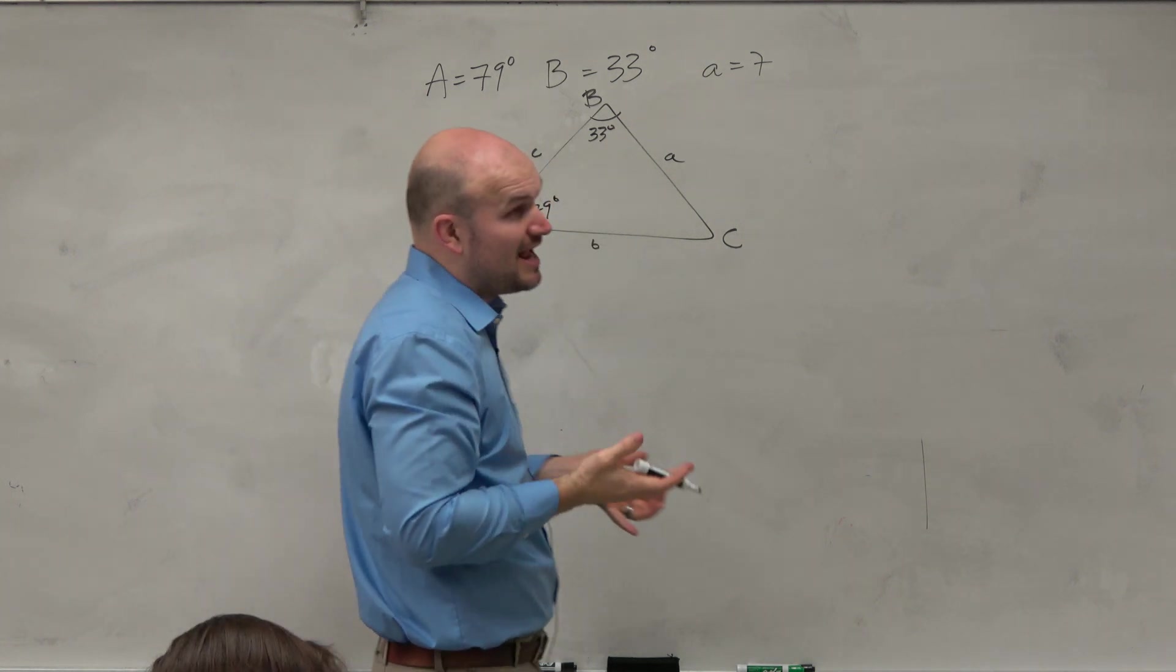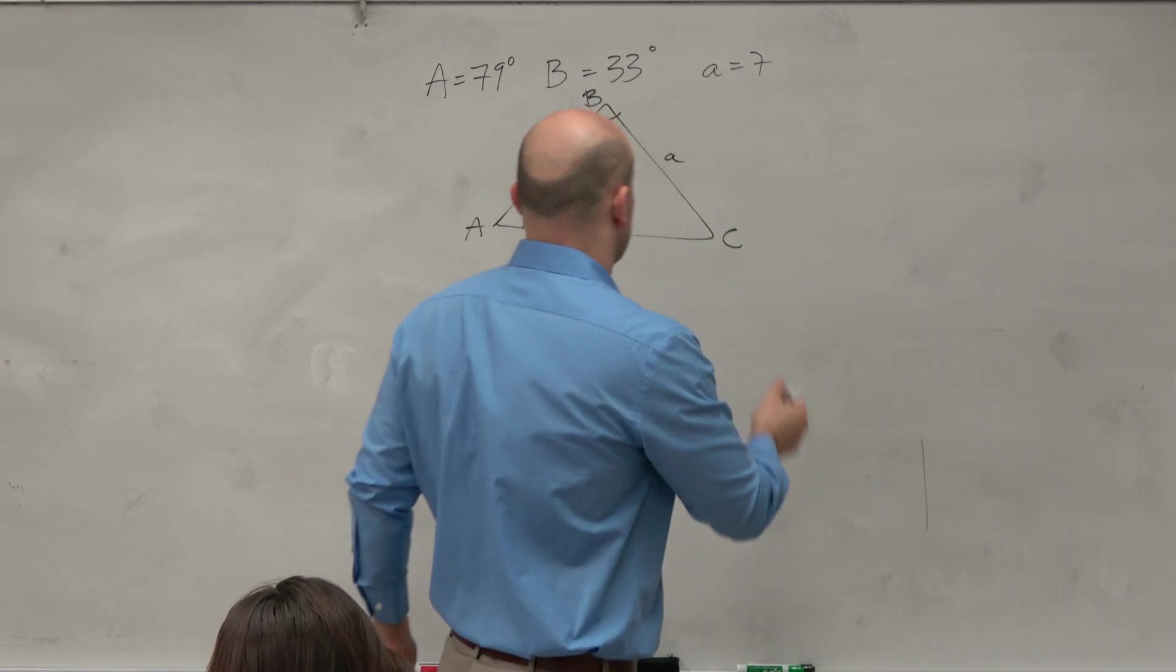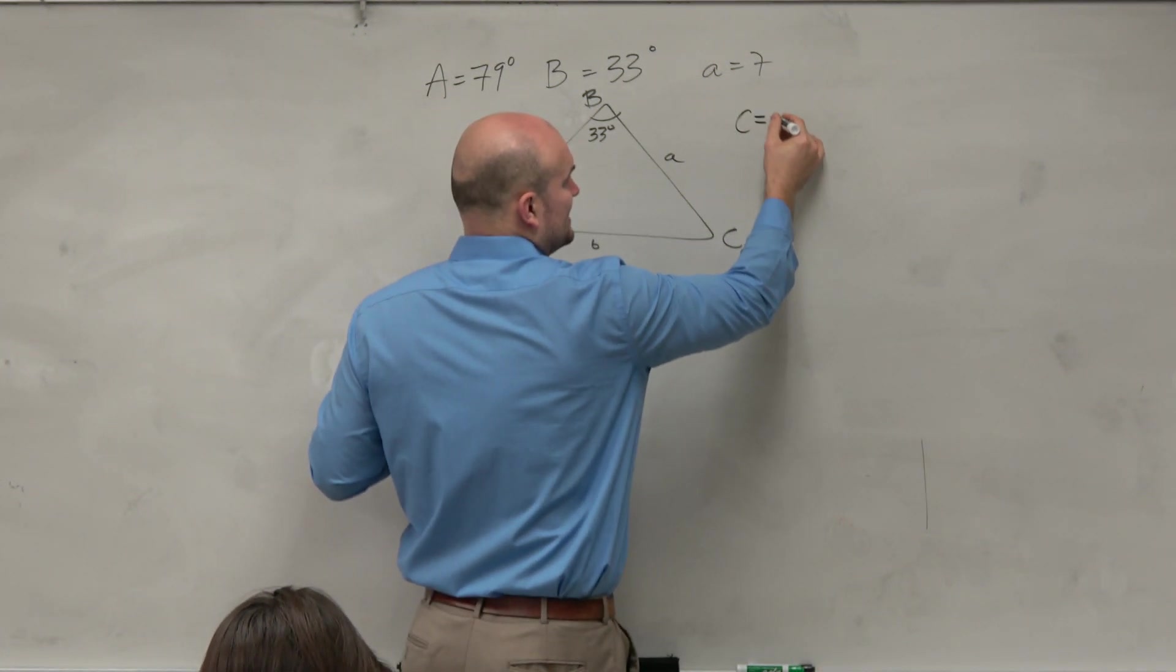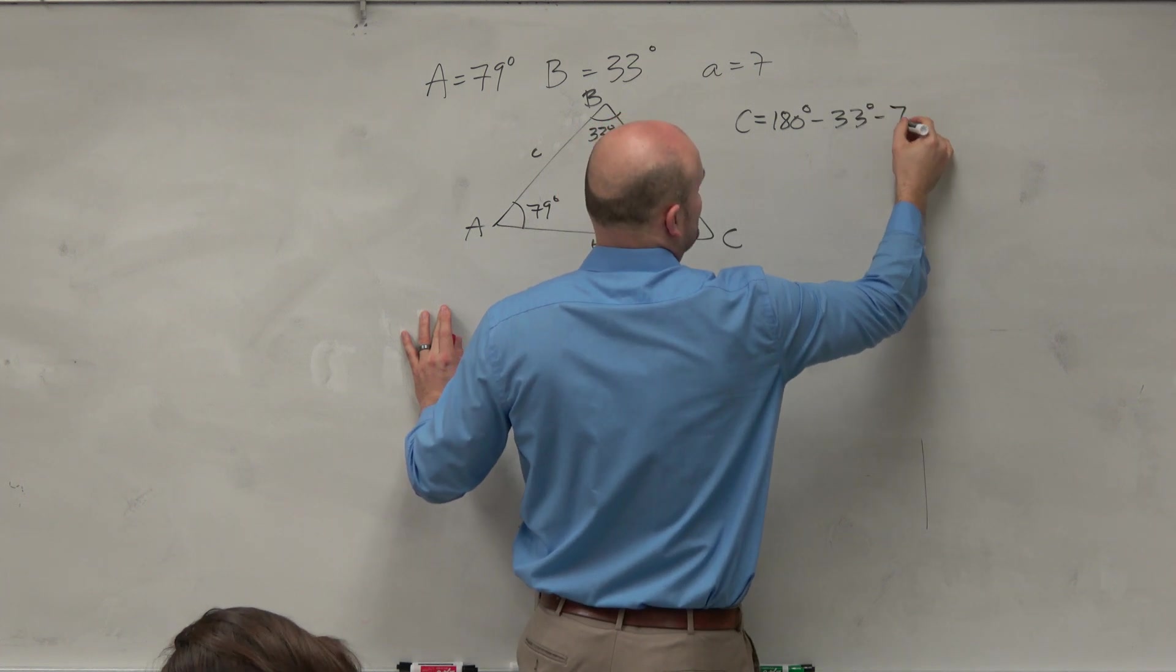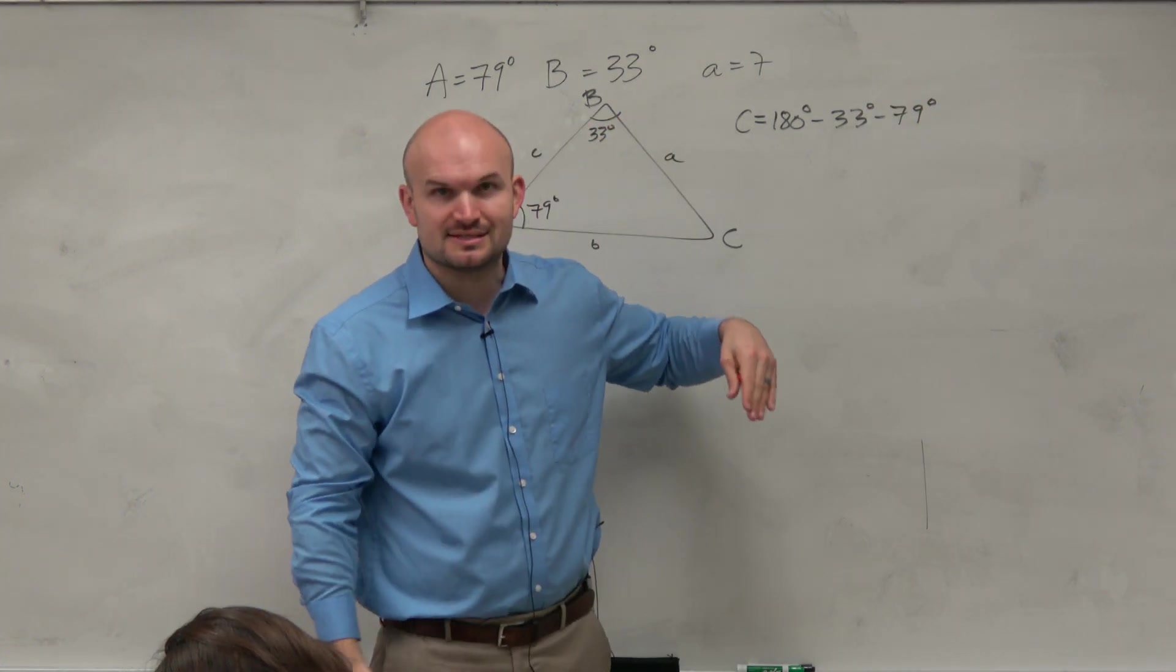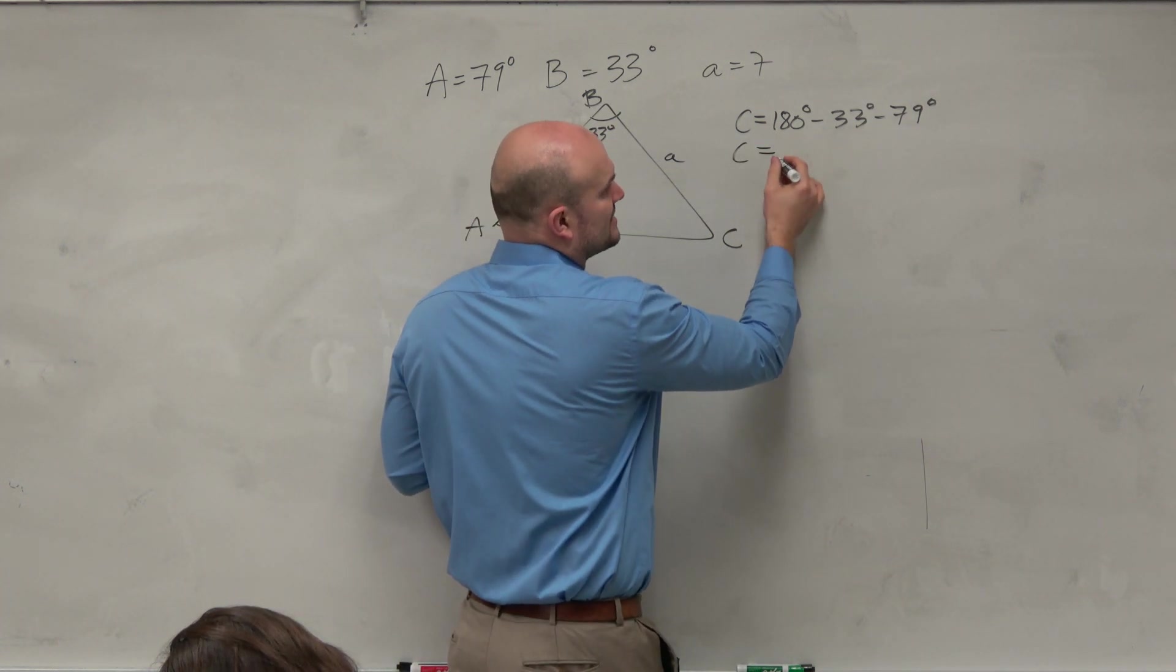The nice thing about having two angles is, again, we do remember that all the sides of the triangle add up to 180, right? So I'll write out the work just so you guys can see. But C is basically 180 degrees minus 33 degrees minus 79 degrees. You don't need to show that work. I'm going to assume that you guys can do that in your head or on a calculator. But again, that ends up equaling 68 degrees.